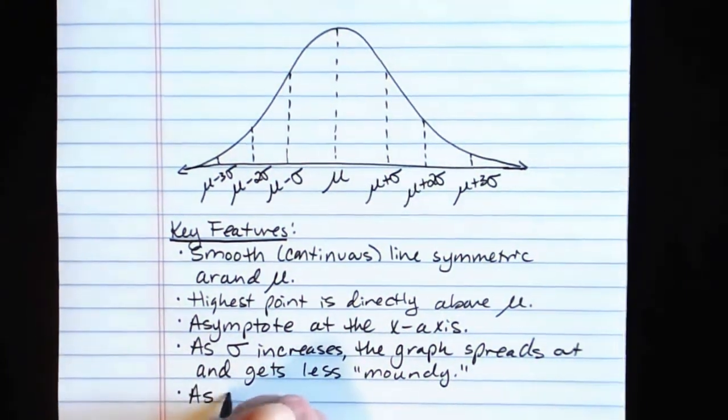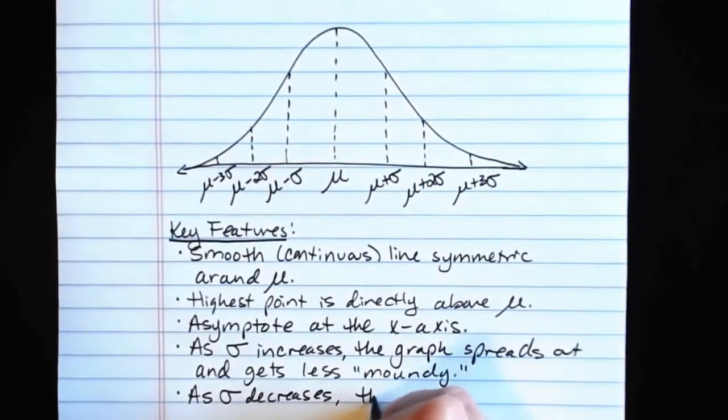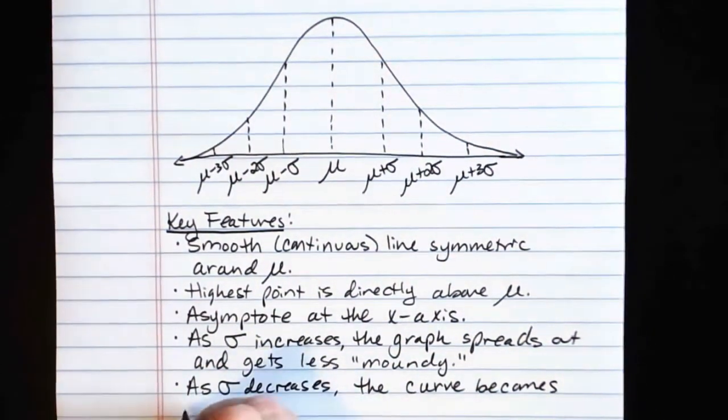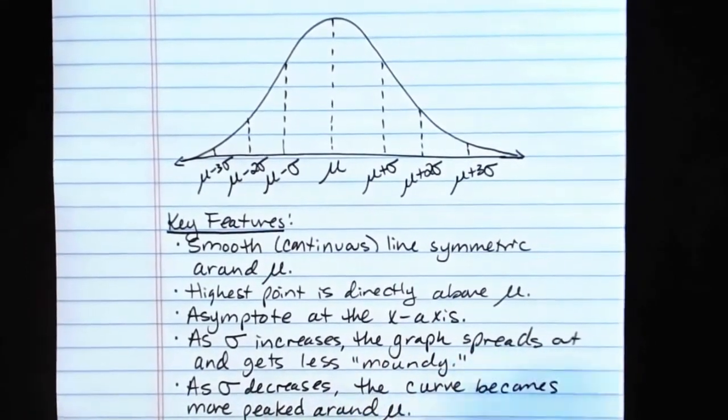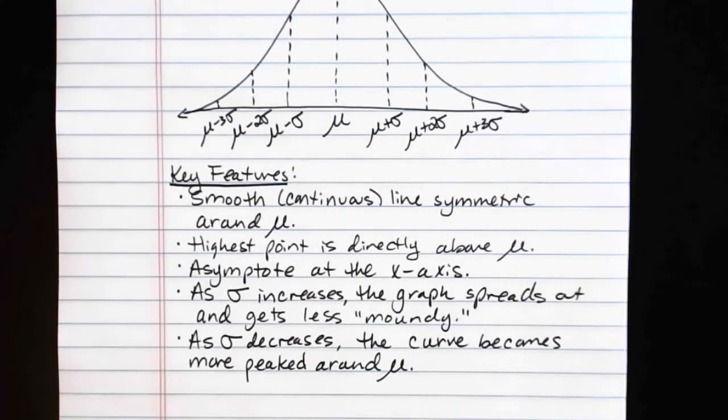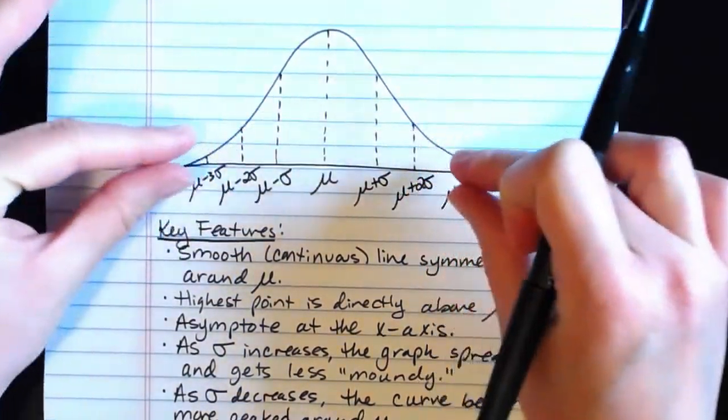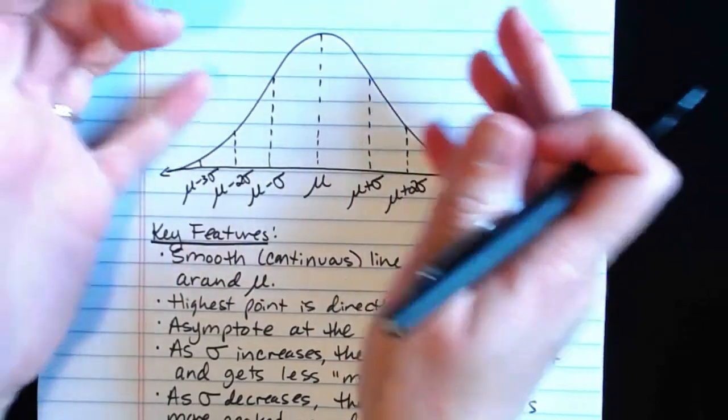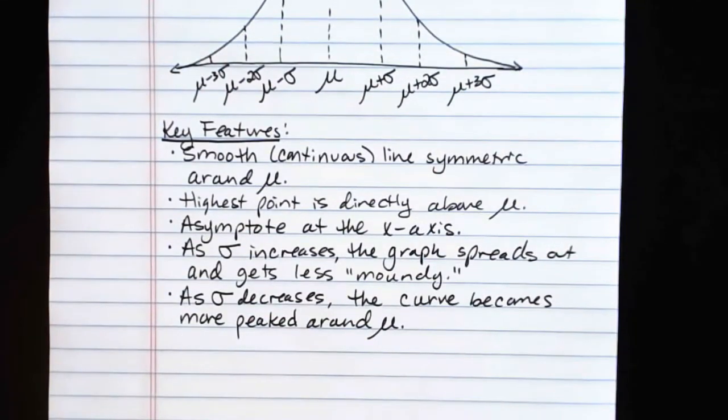As the value of sigma decreases, the curve becomes more peaked around mu. So what you would see there is if we were to take this graph and decrease the value of sigma, what you would see happen is there would be less area in the tails. This entire thing would smoosh in, and the graph would get essentially taller and thinner as it went up there. So those are just some of the key features. Oh, sorry, there's one more key feature.